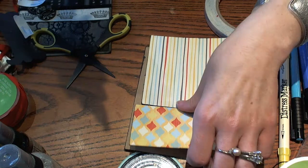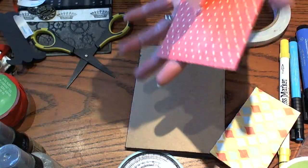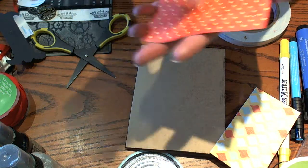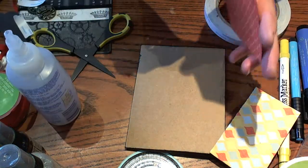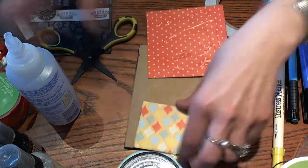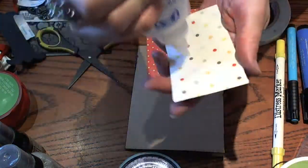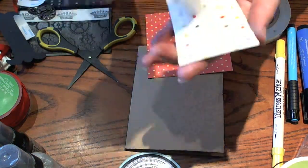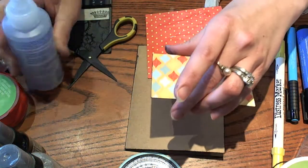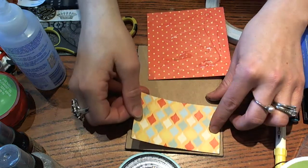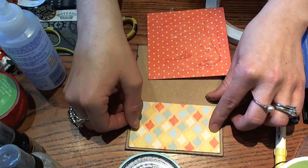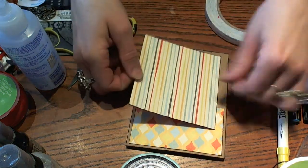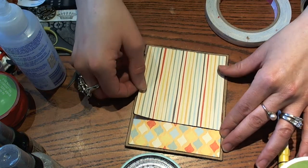We're going to attach these to the base of our card. Attach the bottom piece first. I always forget how I'm going to layer these until I get going. So we'll attach the bottom piece first. You want to make sure that you try to line that up with the edges of your card. And then we'll attach the top piece.